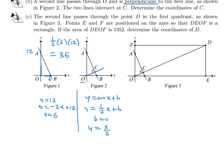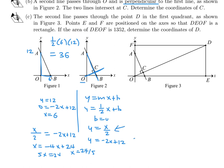To find the coordinates of C, set the two lines equal: x/2 = −2x + 12. Multiplying through by 2 gives x = −4x + 24, so 5x = 24, meaning x = 24/5. Substituting back gives y = 24/10 = 12/5. So the coordinates of C are (24/5, 12/5).